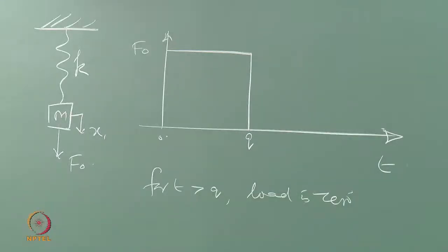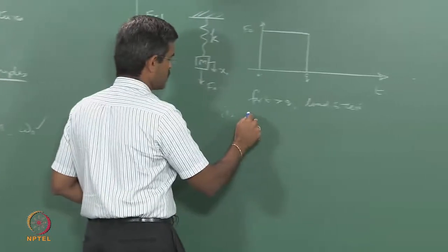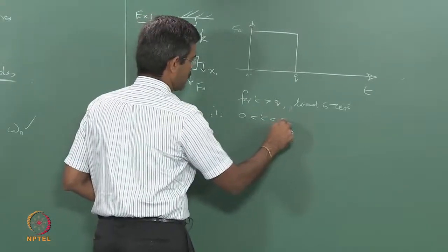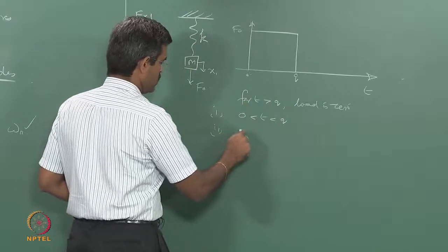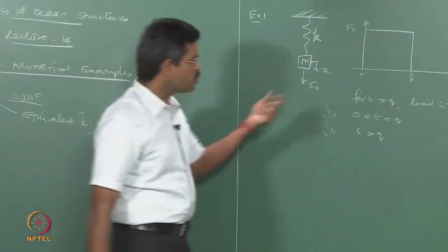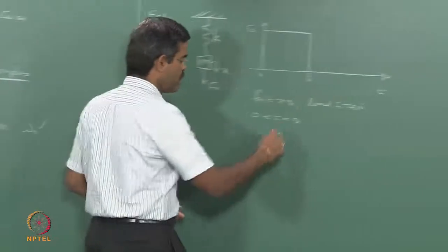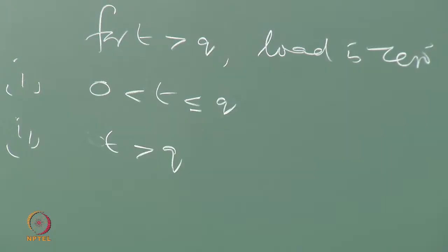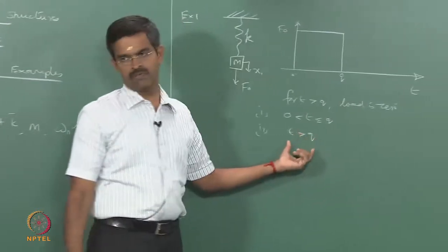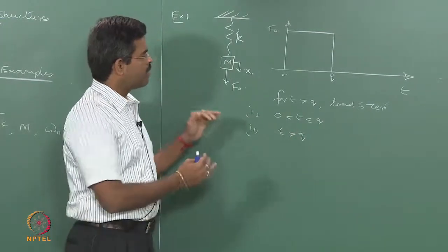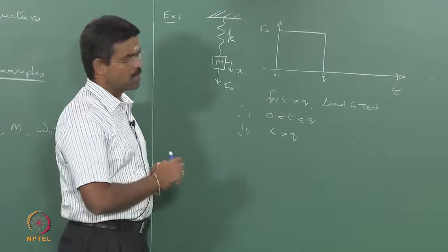There are two cases here, so I will split the problem into two parts. One is for 0 less than t less than or equal to q, and the other is for t greater than q. For any value more than q, the function is straightforward. So let us try to answer this problem in two parts and see how it can be handled.